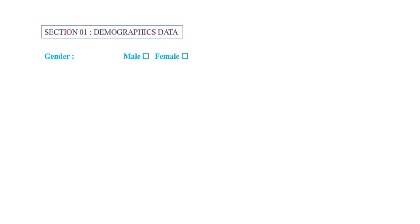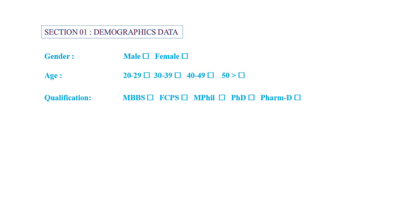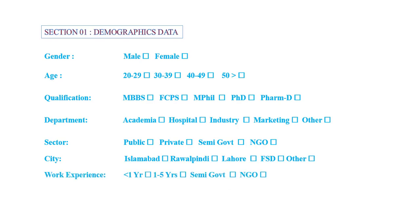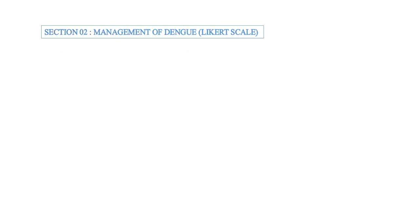Demographic data is the first section after the consent form. In this section we ask about gender, age group, qualification, department, sector (either private or public), city, and work experience.